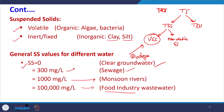The total dissolved solids (TDS) range also varies for different types of wastewater. For fresh water, TDS may be 0 to 1000 mg/L. For slightly saline water it is 1000 to 3000 mg/L. For moderately saline water it is 3000 to 10,000 mg/L.